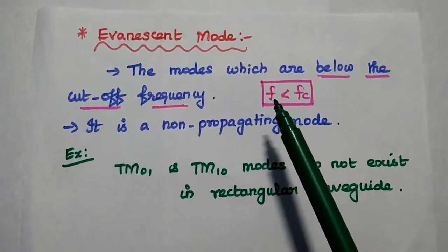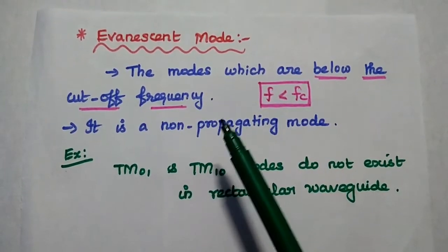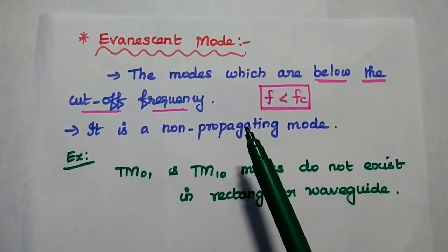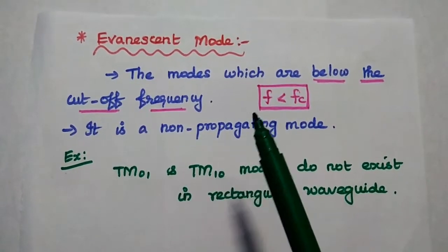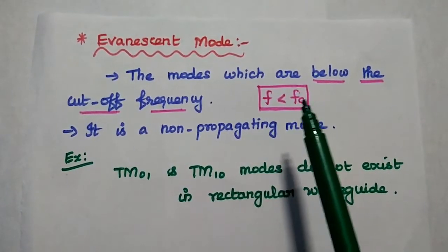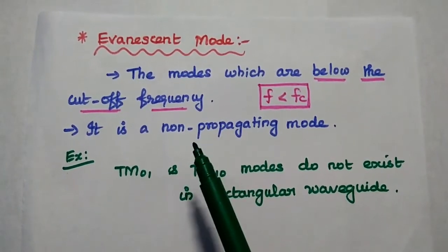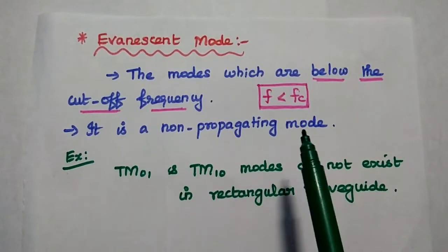Next one is evanescent mode. These are the modes which have frequency below the cutoff frequency. As we all know, whenever the frequency is less than the cutoff frequency, there is no wave propagation. So evanescent mode is a non-propagating mode.